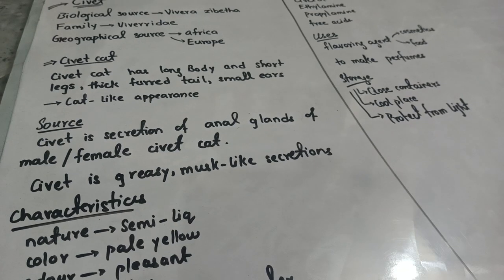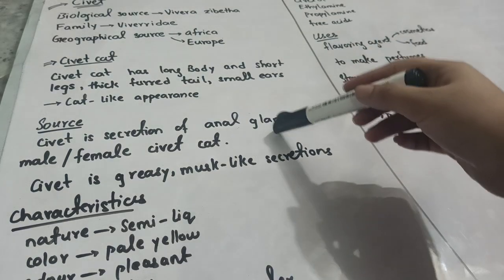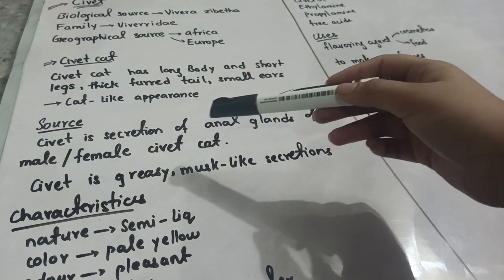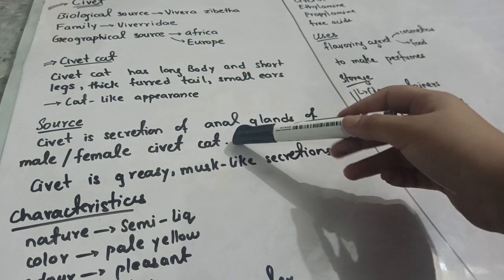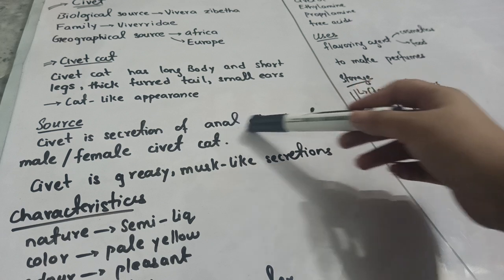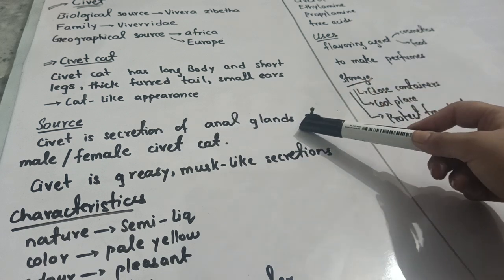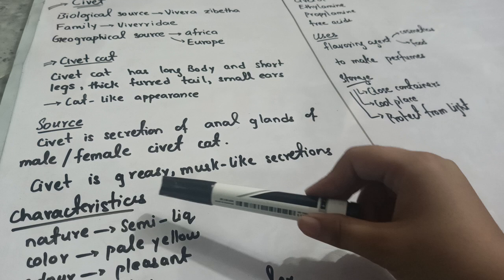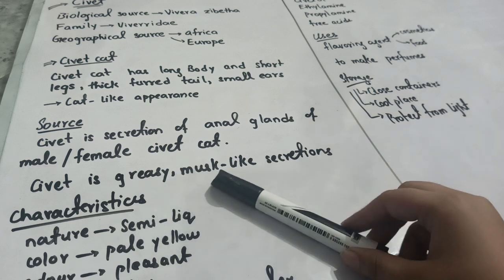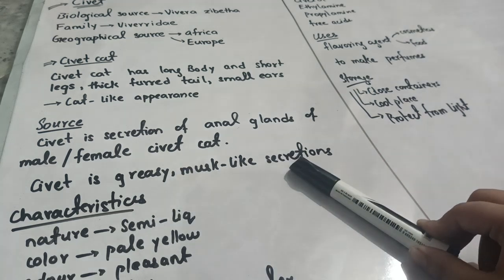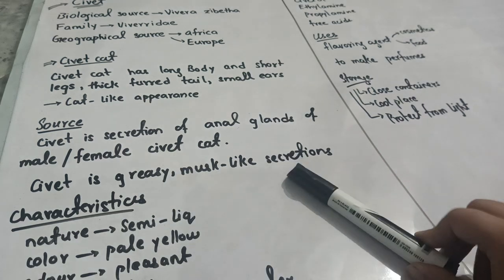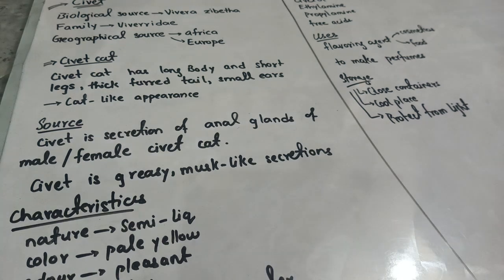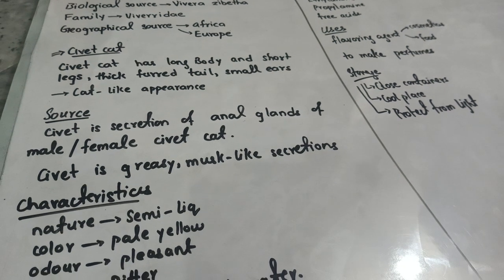Civet is our drug which is obtained from this cat. Civet is actually the secretion of the anal glands of both male and female civet cats. This anal gland secretion becomes the civet drug — it is a greasy and musk-like secretion.